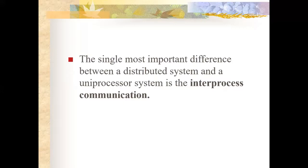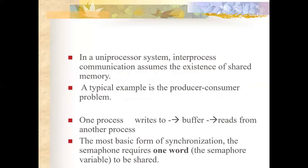When there exists direct communication from one process to another process, it is called inter-process communication. On the other hand, when communication goes from one process to a group of processes, it is said to be multicast. Inter-process communication assumes the existence of shared memory. A typical example is the producer-consumer problem, where one process writes to a buffer and another process reads from it.